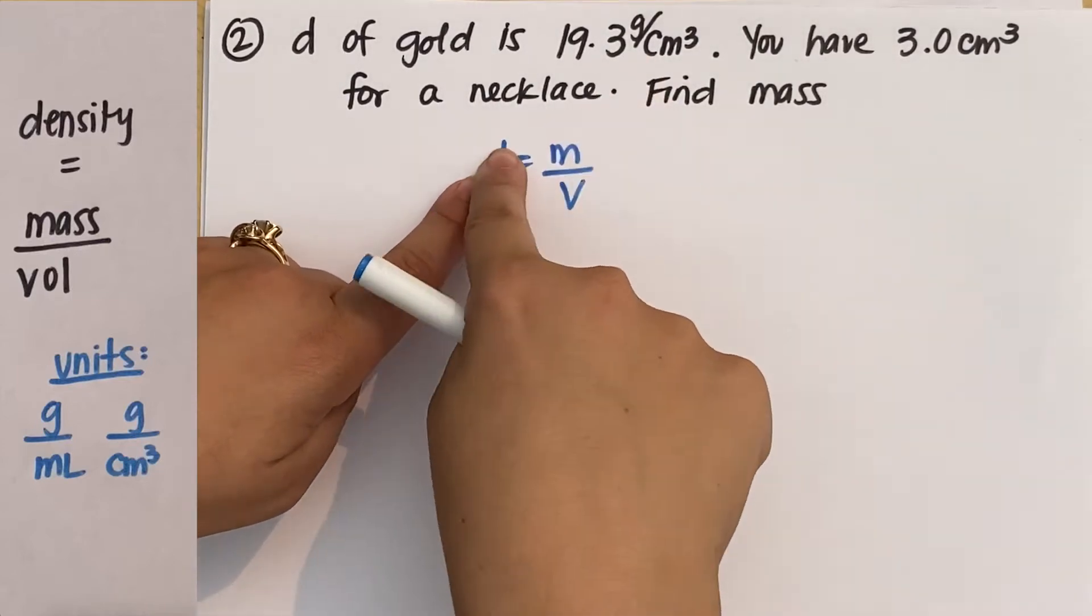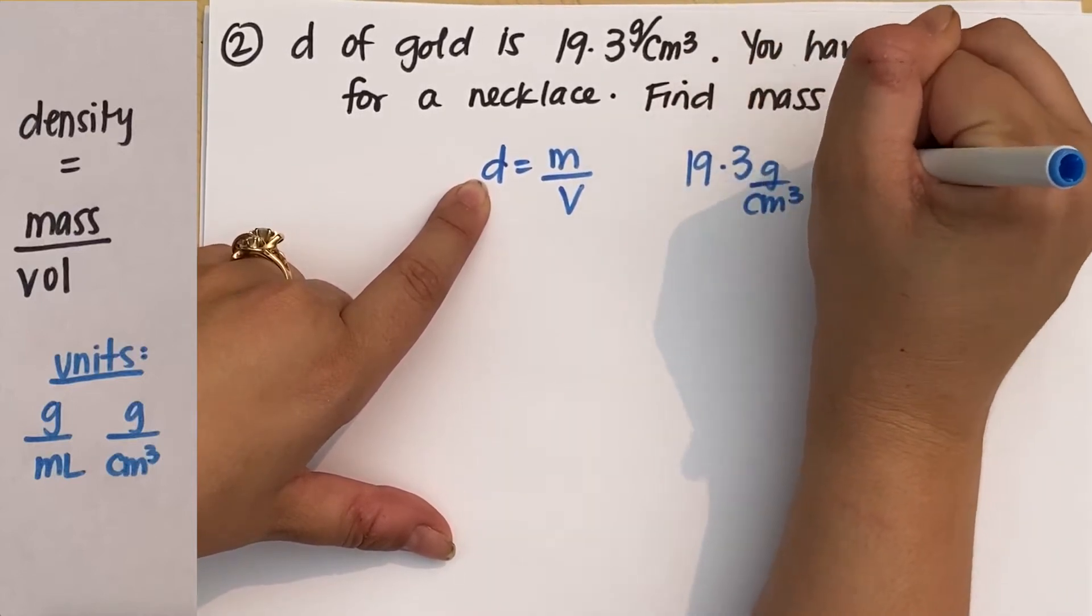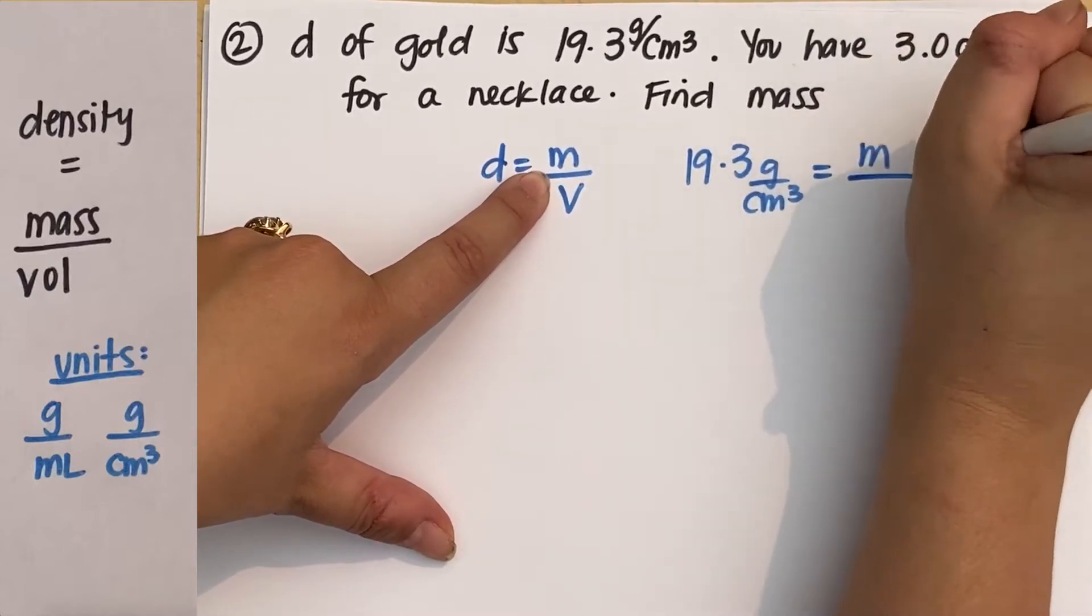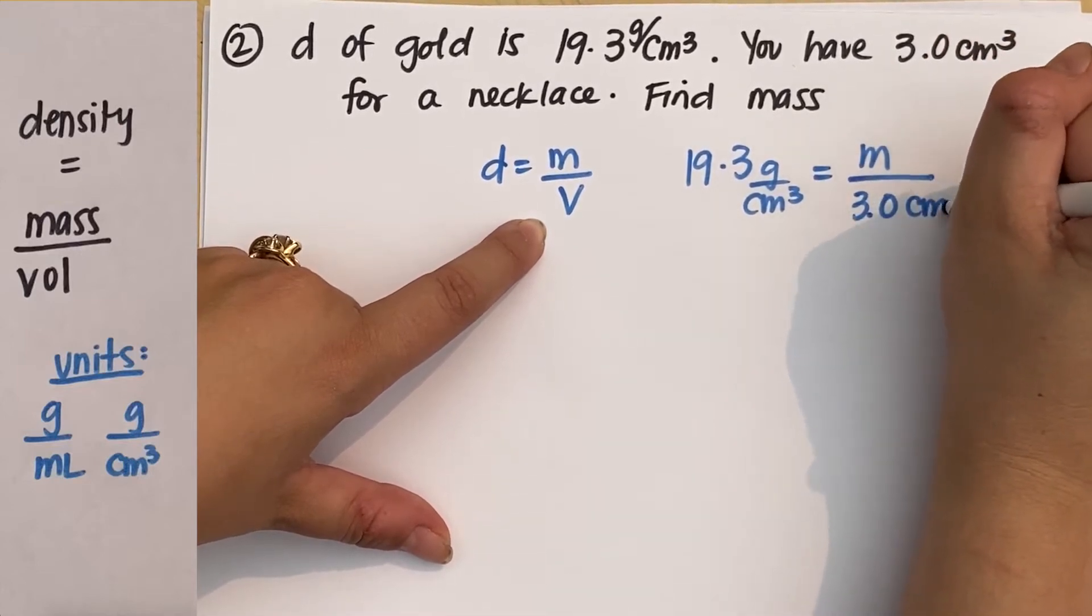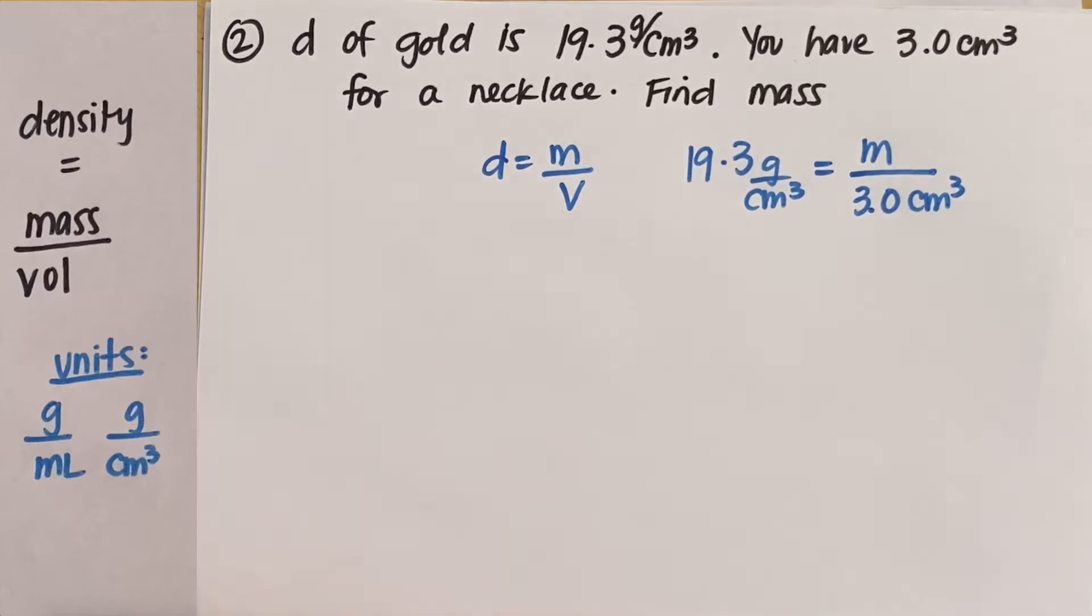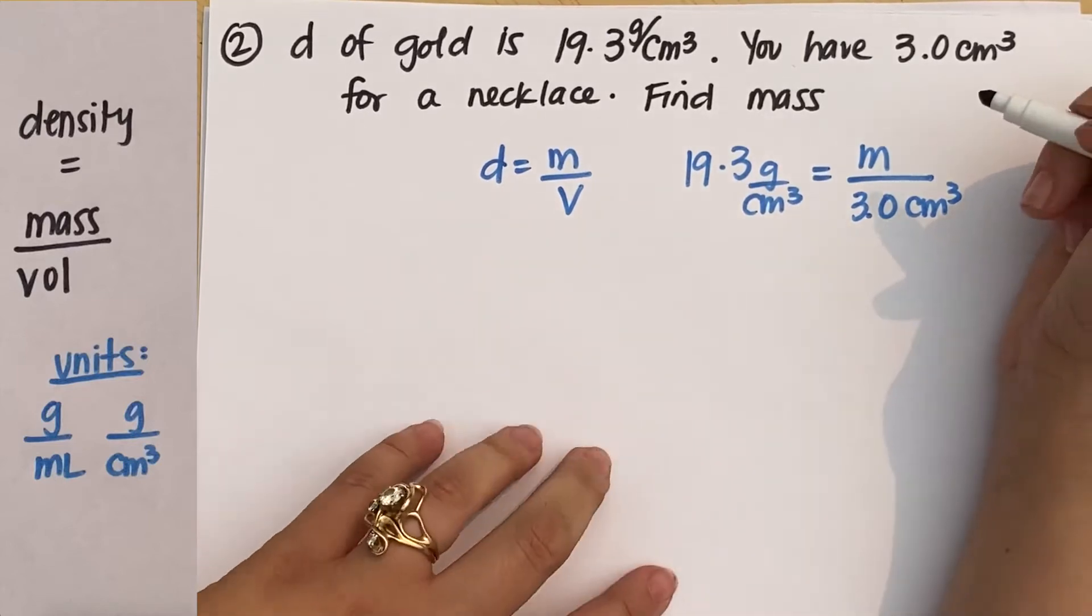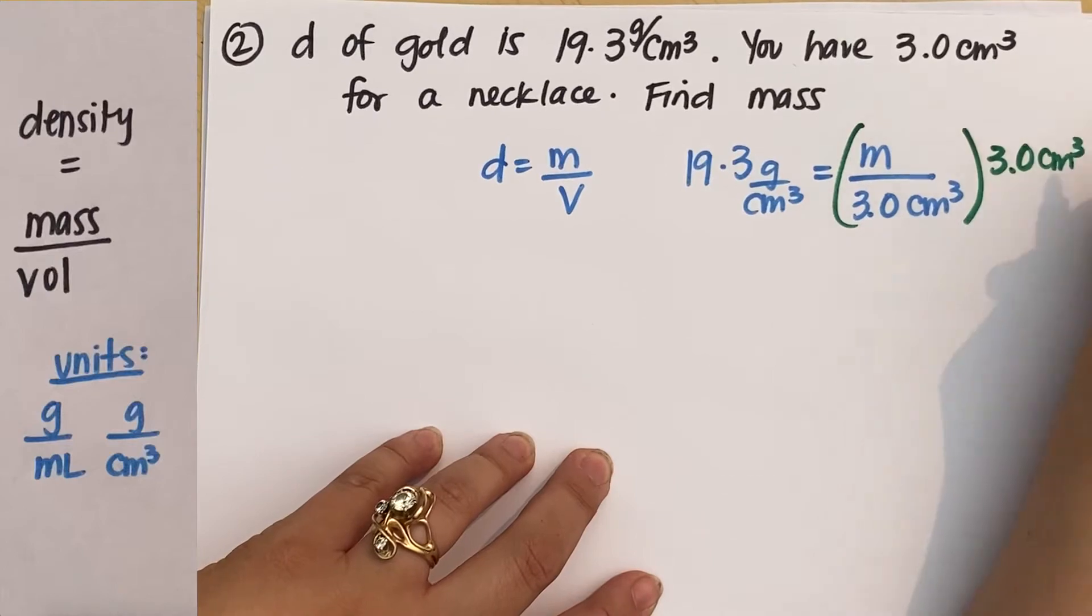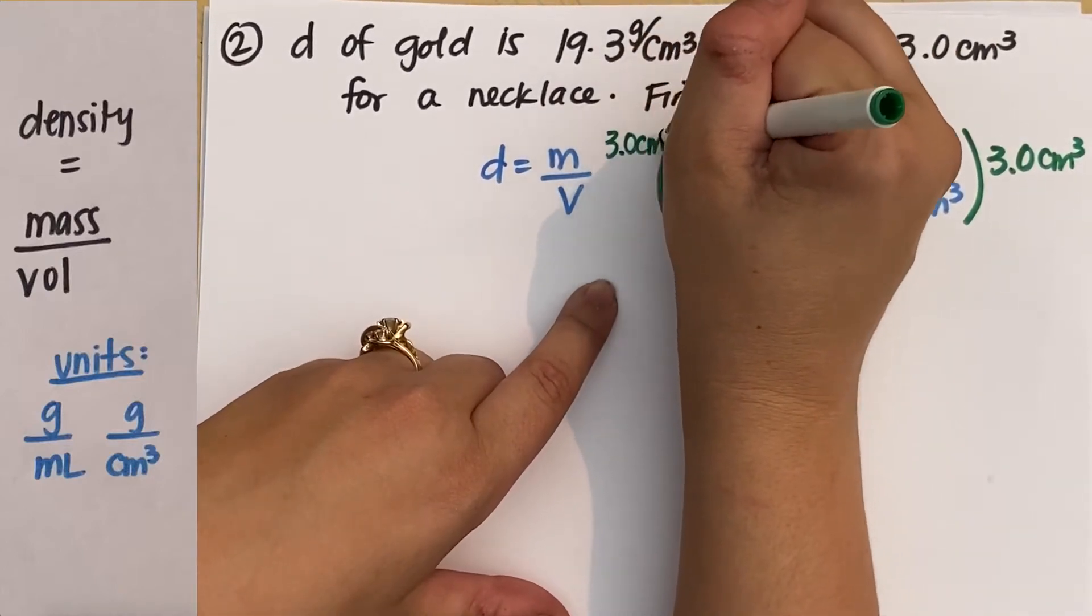So I have the density, 19.3 grams per centimeter cubed equals mass. I need to find mass divided by 3.0 centimeters cubed. So I set up my problem correctly. And now I just solve for mass. So right now mass is being divided by three. So I need to multiply the right by 3.0 centimeters cubed and multiply the left by 3.0 centimeters cubed.